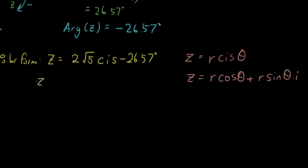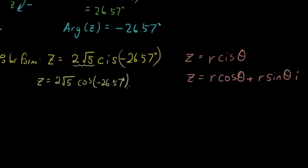So z simply equals 2 square root of 5 — which is r — times cos of negative 26.57 degrees, plus 2 square root of 5 times sin of negative 26.57 degrees, times i.